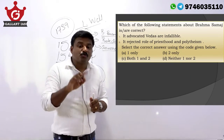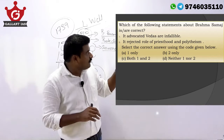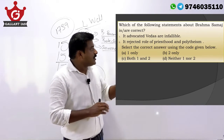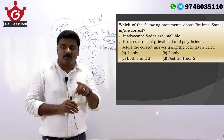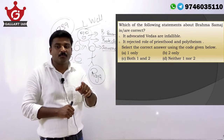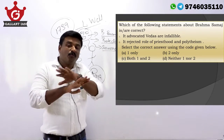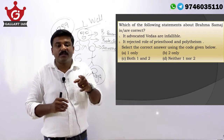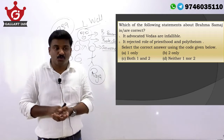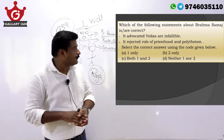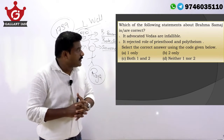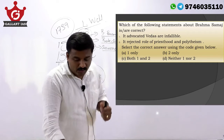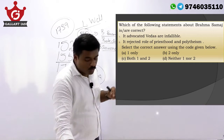Note that Dayananda Saraswati believed the Vedas are infallible, unlike Brahma Samaj. The question asks which statement about Brahma Samaj is correct. Option A — it advocated Vedas are infallible — wrong, Brahma Samaj held Vedas are NOT infallible. Option B — it rejected the role of priesthood and polytheism — true statement. The answer is B.